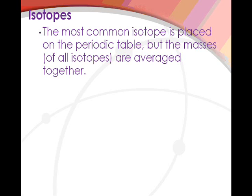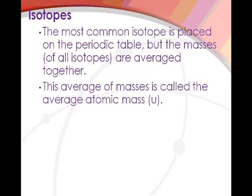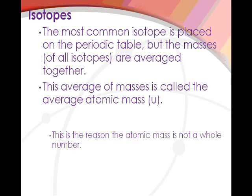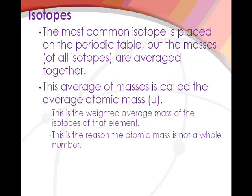The way they determine the masses is that the most common isotope is placed on the periodic table, but the masses of all isotopes are averaged together. The percentage of how abundant they are is calculated into that average — it's not like you just add 1, 2, 3 and divide by 3. Since you have more hydrogen 1, the mass of 1 is weighted heavier than the masses of 2 and 3. This average of masses is called the average atomic mass — it's the same number underneath the element symbol, and we use the unit U. This is the weighted average mass of the isotopes of that element, and this is the reason the atomic mass is not a whole number — it's because it's an average, and that's why we have decimal places.